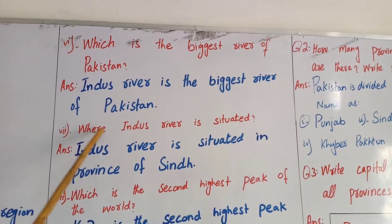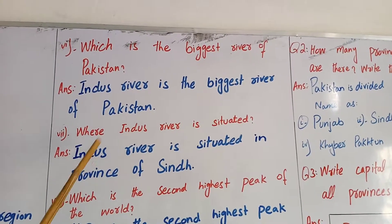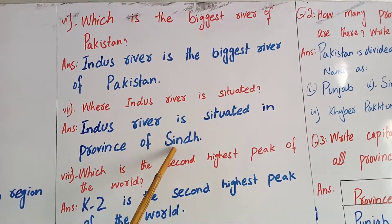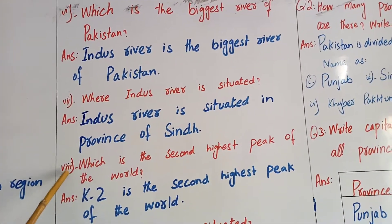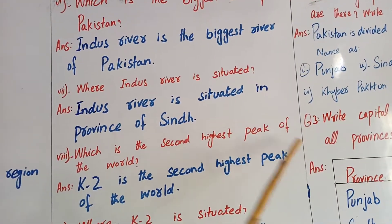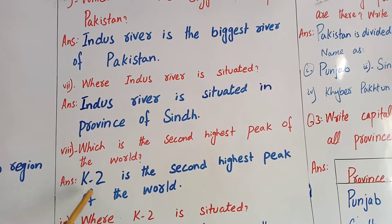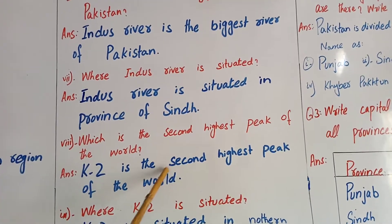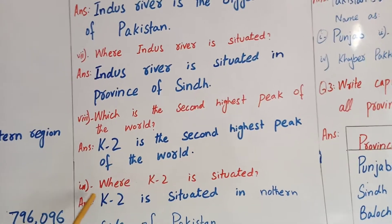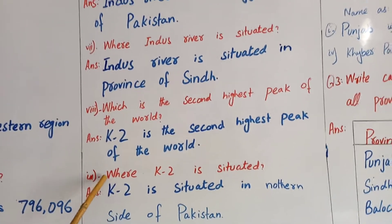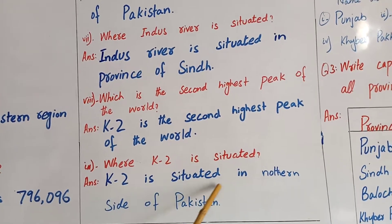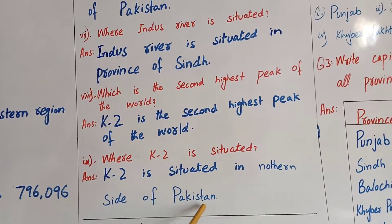Seventh question: where is the Indus River situated? The Indus River is situated in the province of Sindh. Eighth question: which is the second highest peak of the world? K2 is the second highest peak of the world. Ninth question: where is K2 situated? K2 is situated in the northern side of Pakistan.